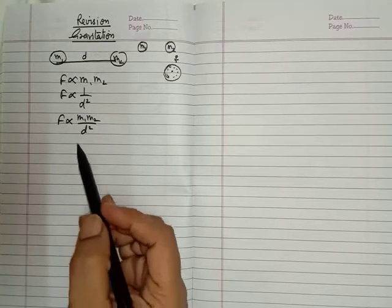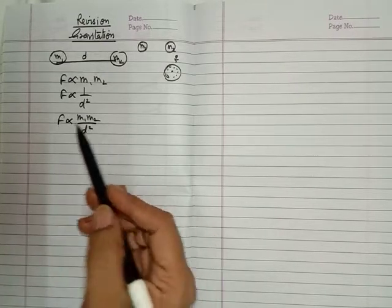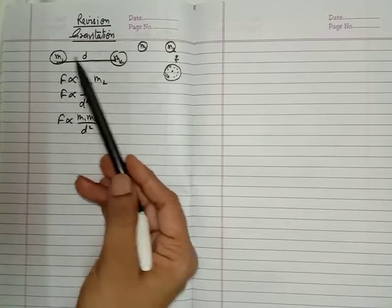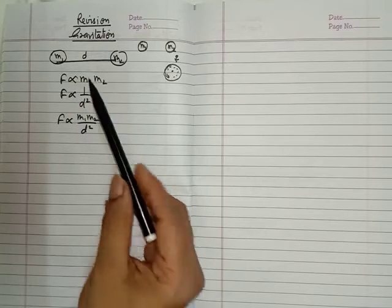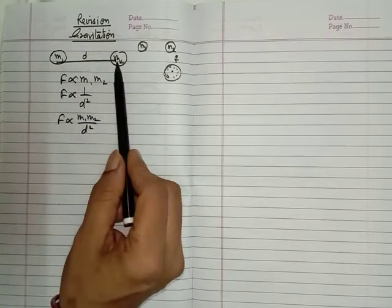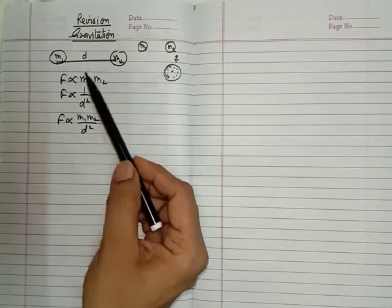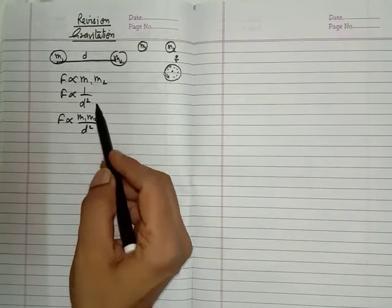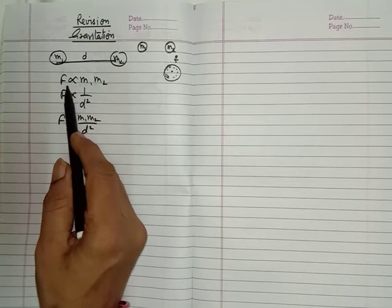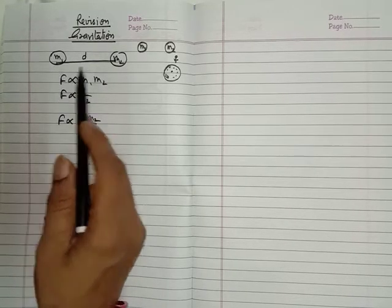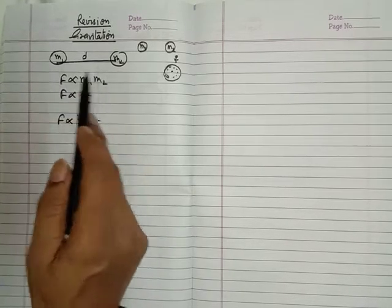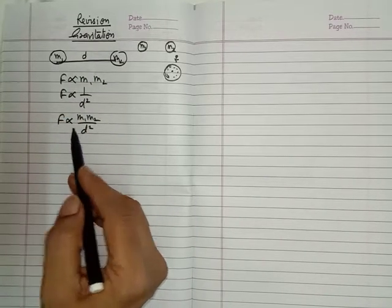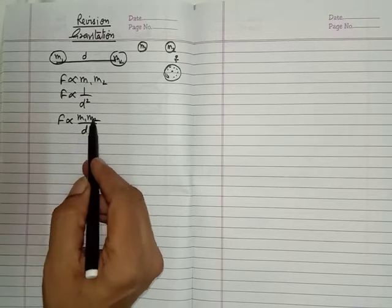First of all you have to write the universal law of gravitation. Every body in the universe attracts another body with a force that is directly proportional to the product of their masses and inversely proportional to the square of the distance between them. So F is proportional to m1 m2 upon d square, and according to Newton's law of gravitation we can say F is proportional to m1 m2 upon d square.